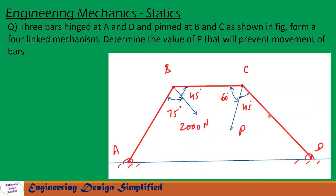In order to prevent movement, a force P is applied on link CD at an angle of 45 degrees from this link and 60 degrees from the other link. In this problem we need to find the amount of P that will prevent the mechanism from moving. Let us see in the coming slides how to solve this problem.